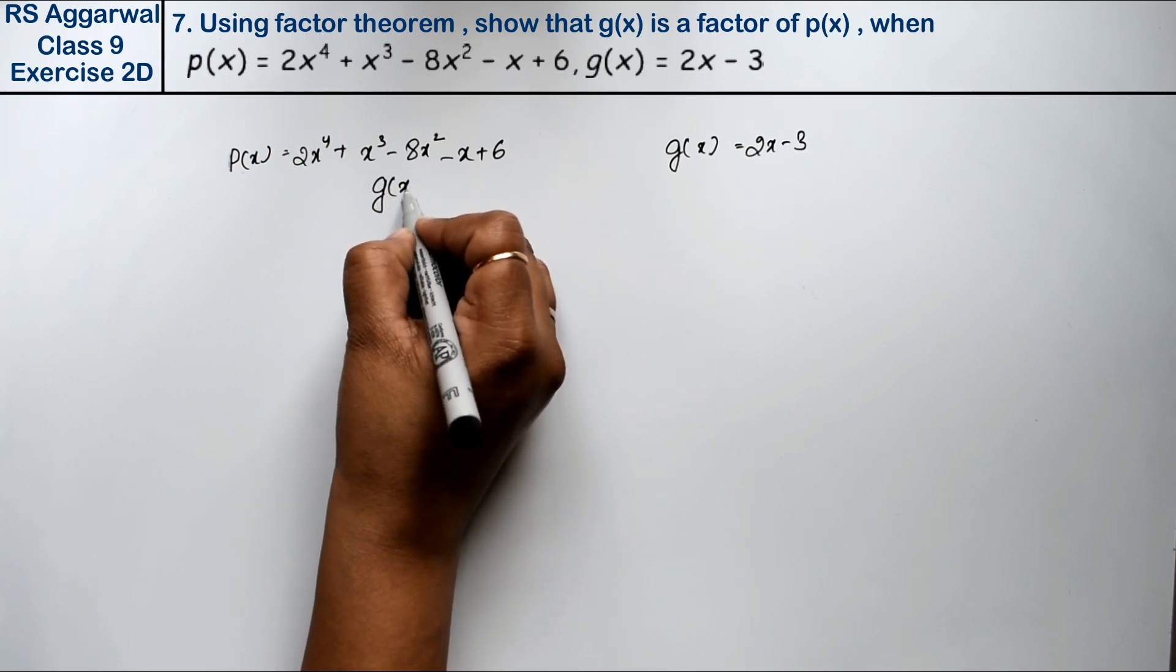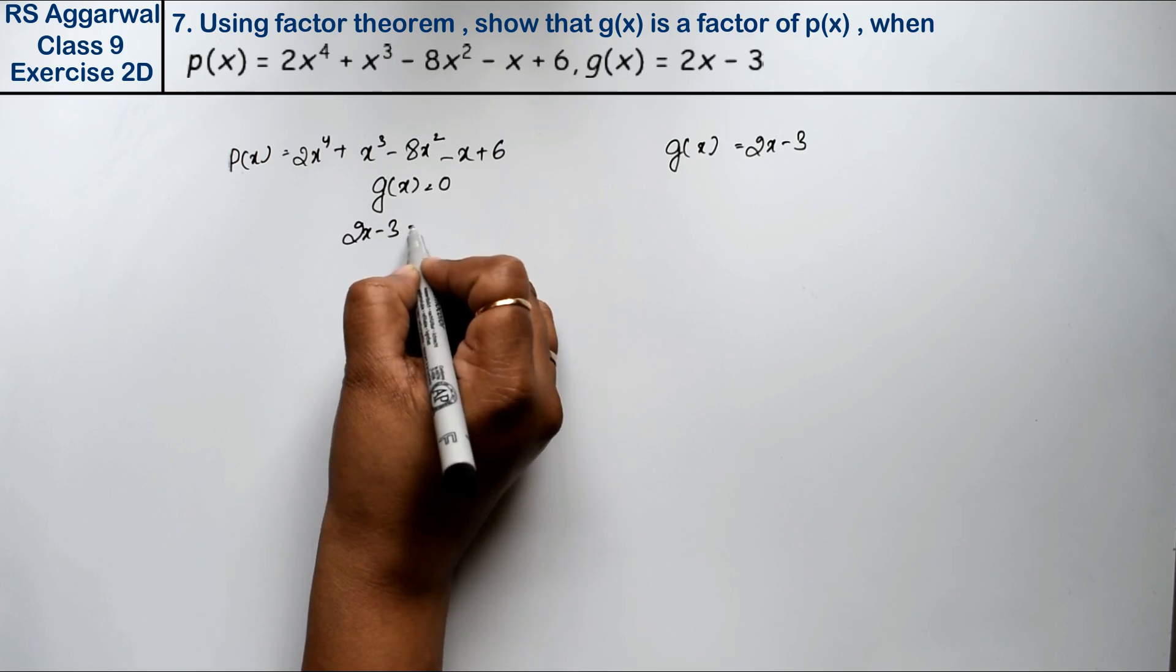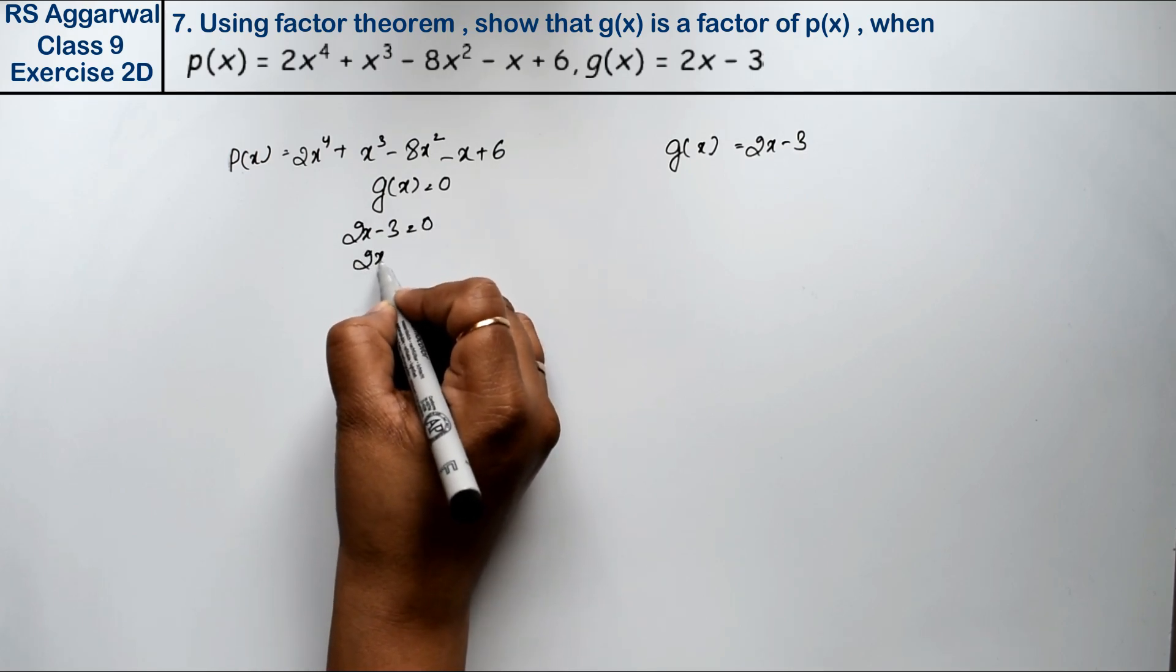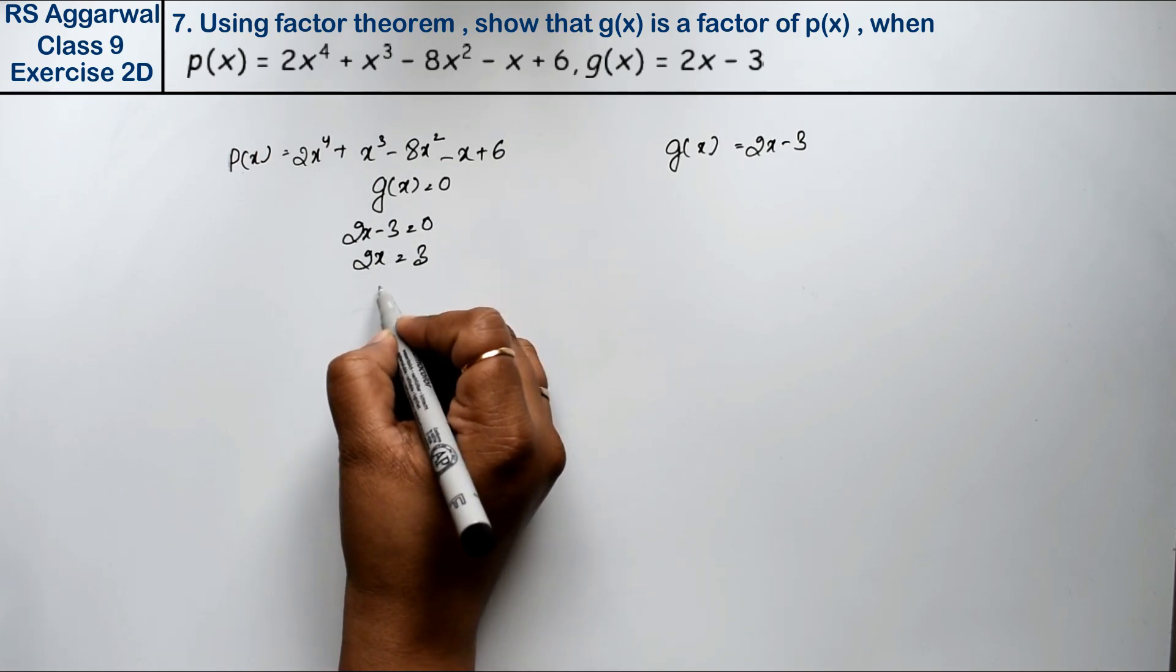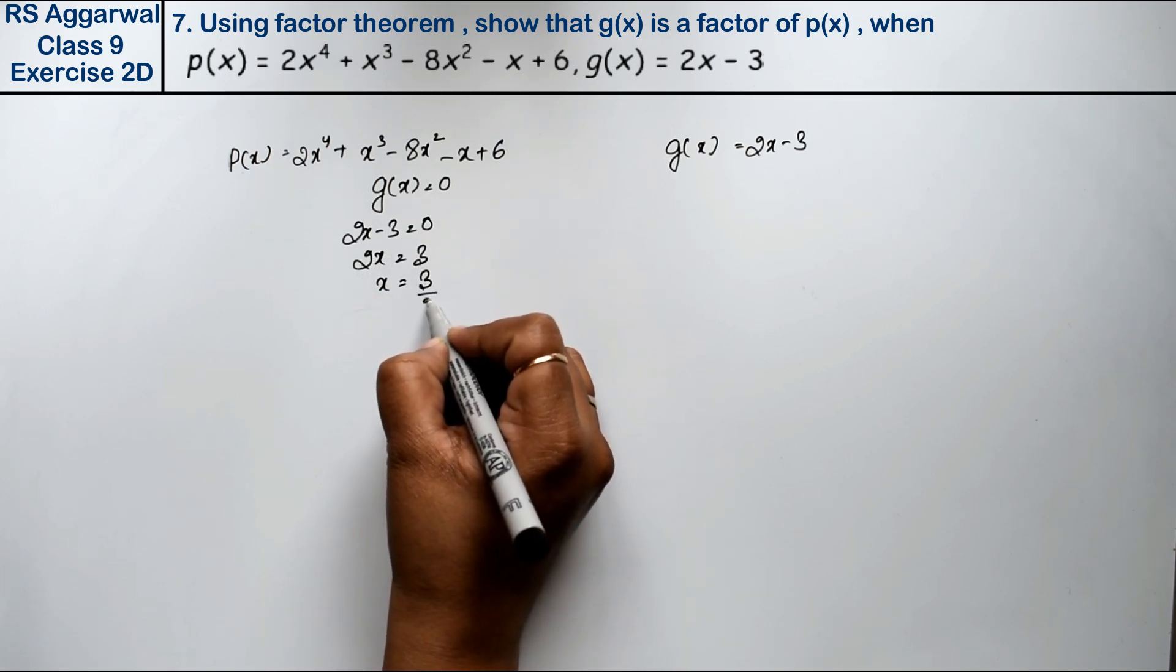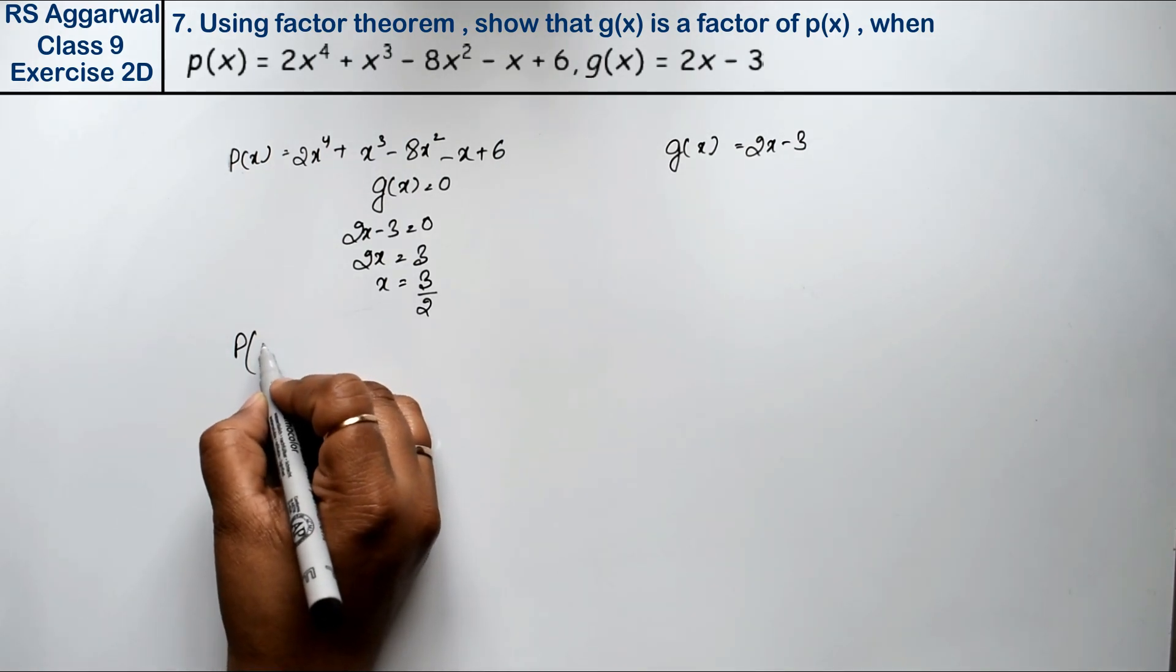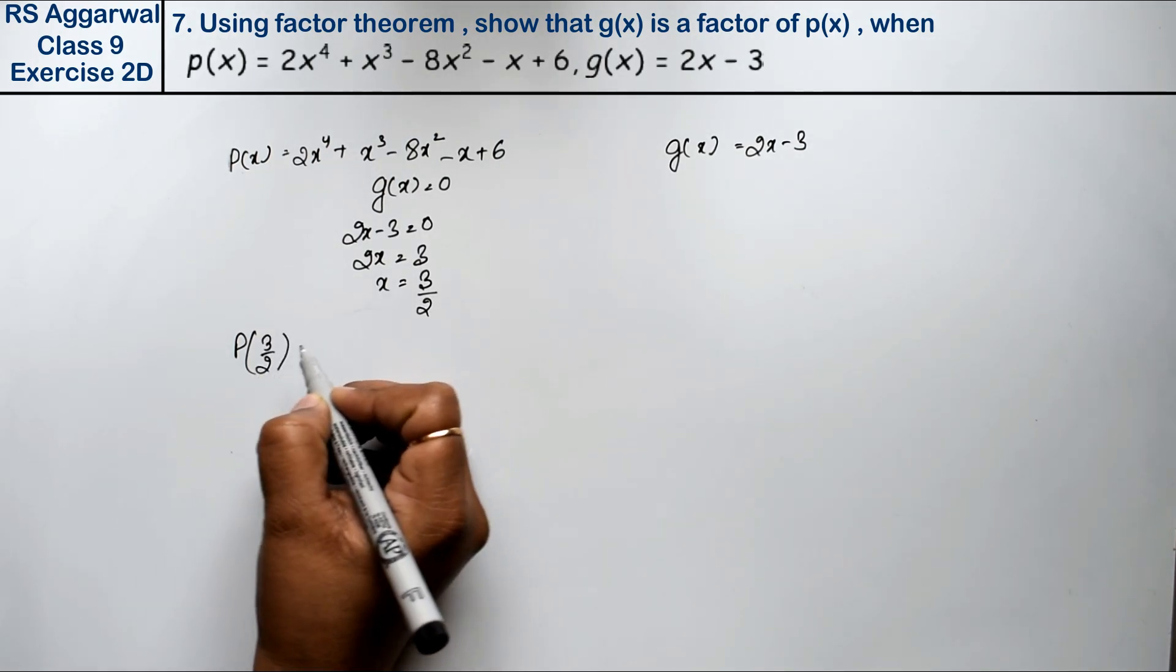So now g(x) is equal to 0. So 2x minus 3 is equal to 0. 2x is equal to 3. The value becomes positive when it goes to the other side, and it was multiplied with 2x, so it becomes divided. Now we will put the value of x as 3 upon 2 in p.